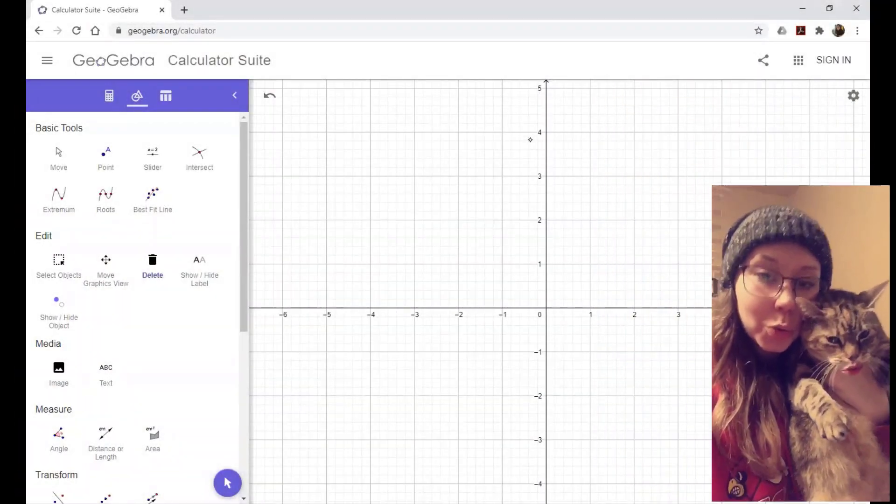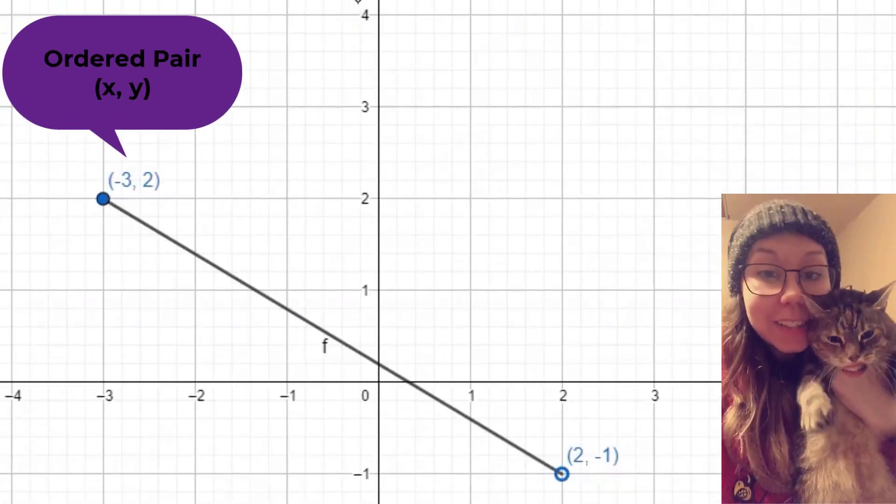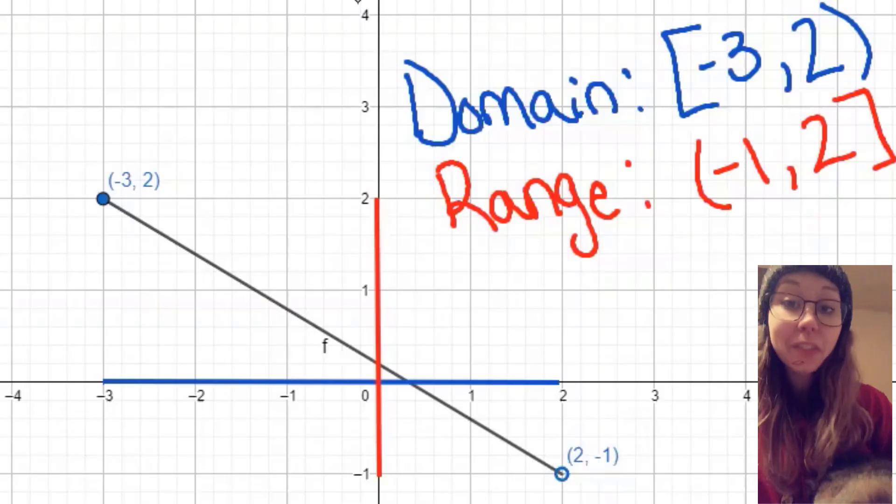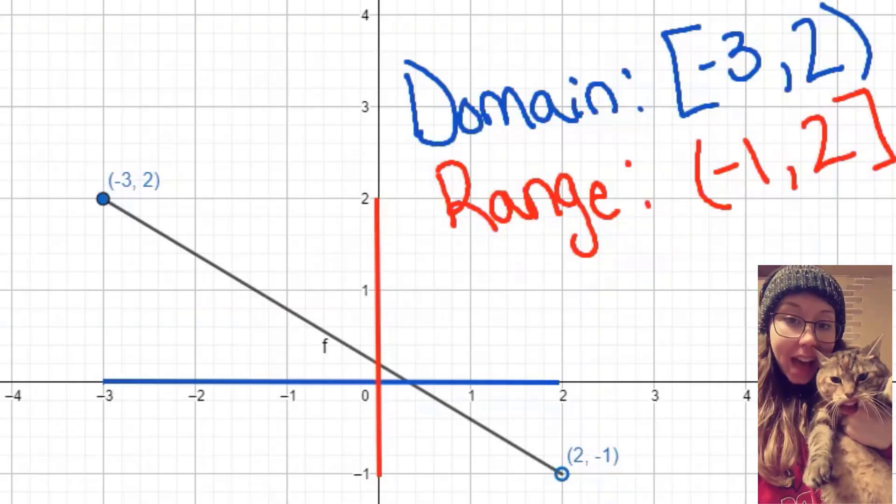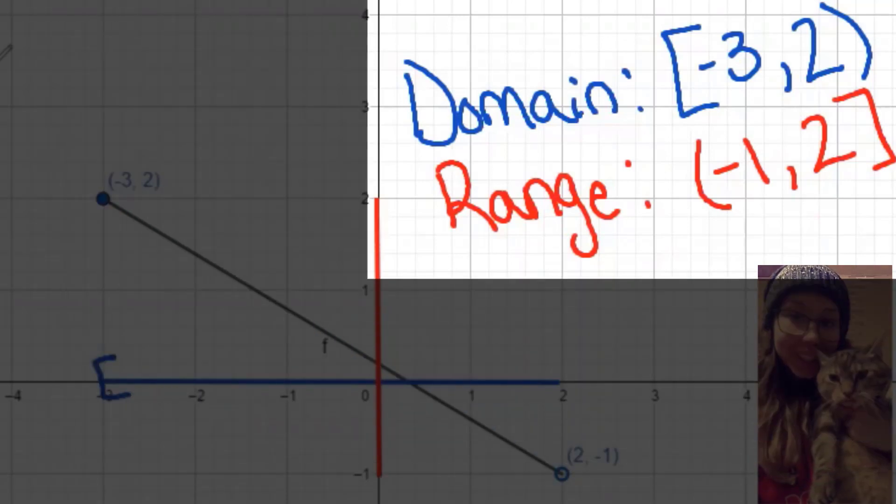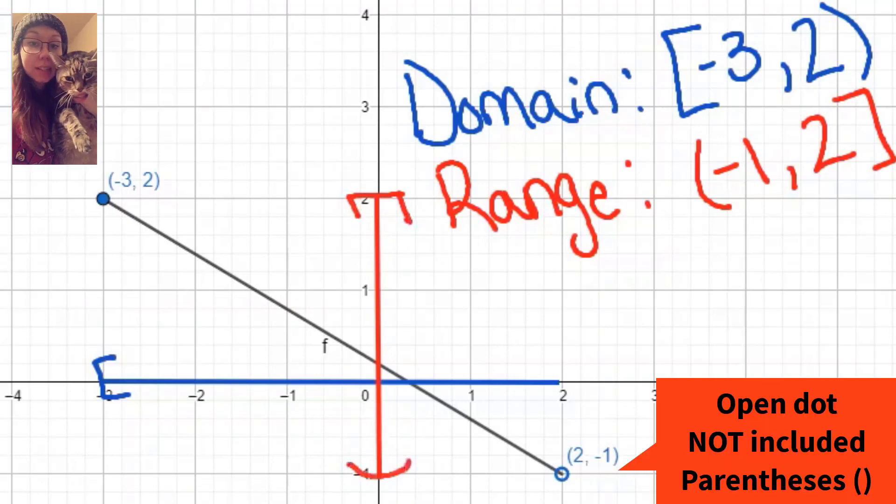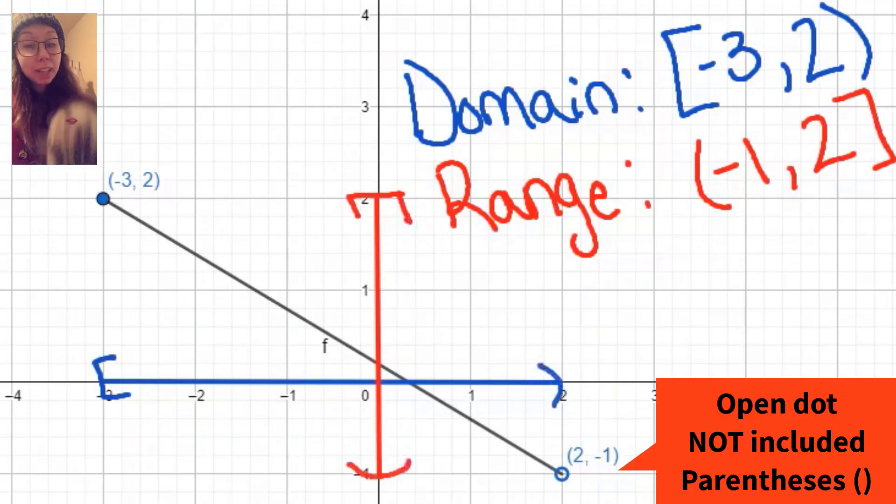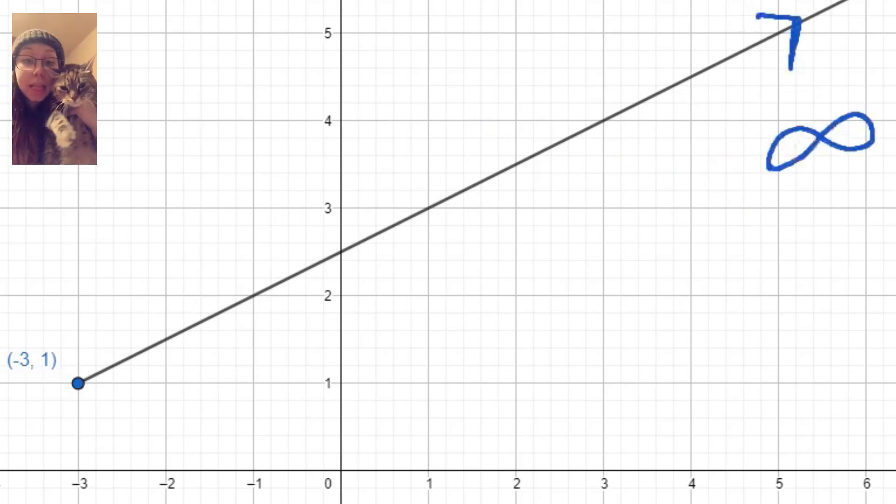Method two, what to do? The coordinate plane. Where we plot the ordered pairs, X and Y once again. If the graph's connected, you cannot make lists like method one. That is why we have interval notation. Use a bracket if the endpoint's included. Use parentheses if the endpoint's excluded. If the graph goes on forever, then we write infinity. But this is not a number, so we put parentheses.